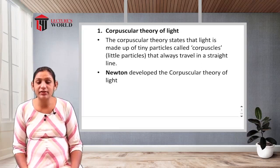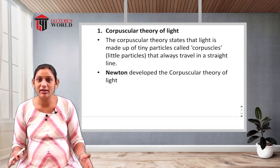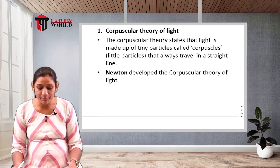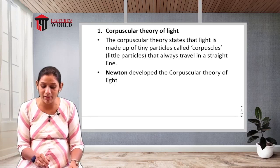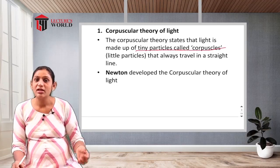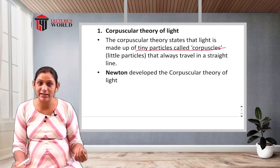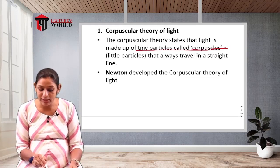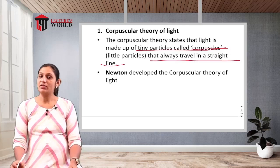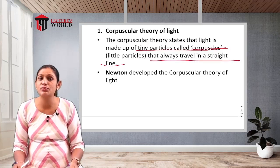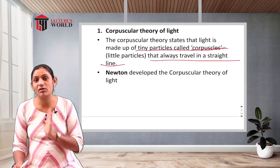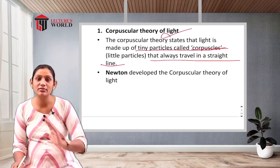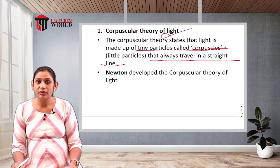The first theory is the corpuscular theory of light. This theory states that light is made up of tiny particles called corpuscles — tiny molecules or particles of light — that always travel in a straight line, just as sound also travels in a straight manner.